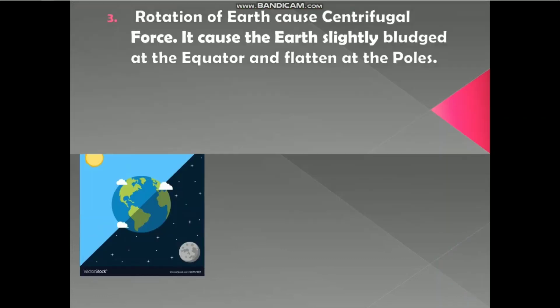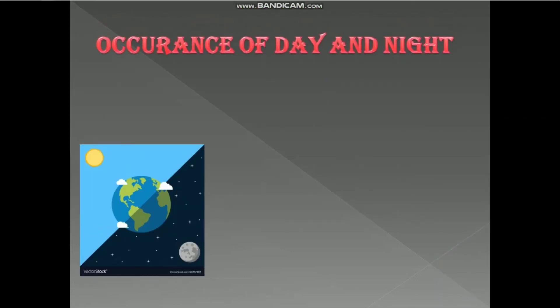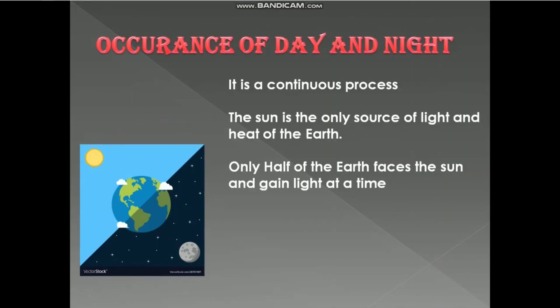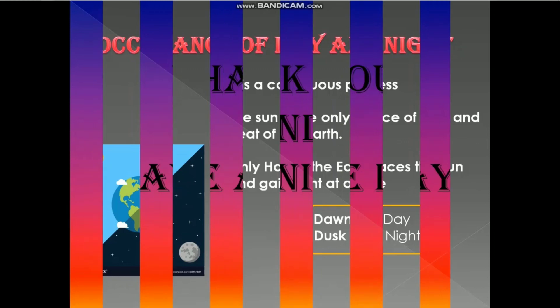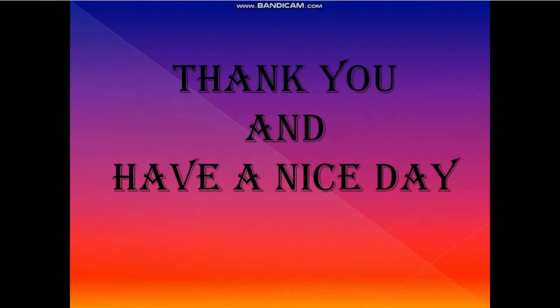Occurrence of day and night — you always notice that the sun rises in the east and sets in the west. But have you ever noticed diffused red and orange lights that appear before sunrise and after sunset? These diffused lights are known as dawn and dusk. That's all for today. Thank you and have a nice day.